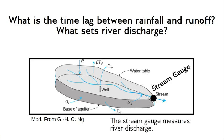We're going to imagine that at the bottom of this catchment we have a stream gauge — a device that measures river discharge. Almost all stream gauges do this by measuring the water level, and then using a combination of empiricism and understanding about flow mechanics to convert that water level into a river discharge in units of volume per time. You can think meters cubed per second, or in the U.S. we often use cubic feet per second.